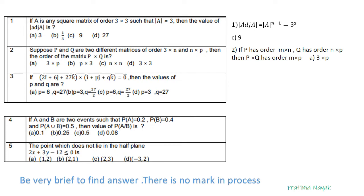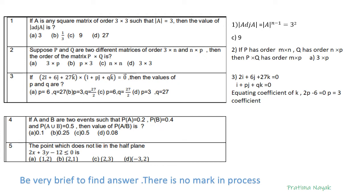Question number 3: if (2i + 6j + 27k) cross (i + Pj + Qk) equals zero vector, find the values of P and Q. Since the cross product is zero, each component is also zero. Equating the k component: 2P minus 6 equals 0, so P equals 3. Equating the j component: 2Q minus 27 equals 0, so Q equals 27/2. The answer is B.